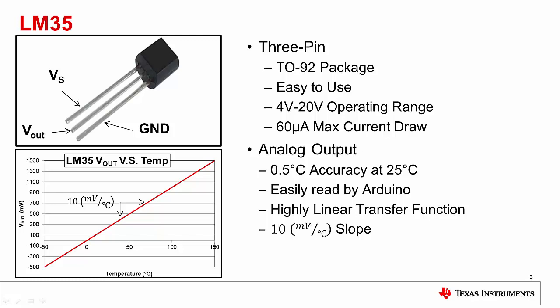In our case, we'll use the 5-volt pin on the Arduino Uno as our supply voltage. This pin can provide up to 40 milliamps of current, which is plenty for the LM35, which draws only a maximum of 60 microamps.